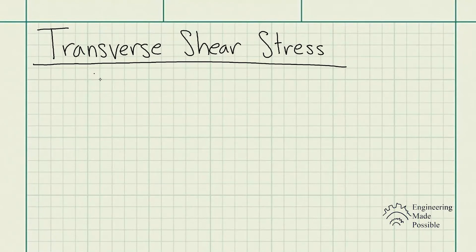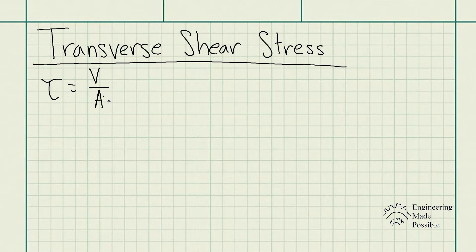Today we'll be going over transverse shear stress. We're all familiar with the shear stress formula, which is equivalent to the shear force divided by the cross-sectional area. One thing to remember is that this is an approximation or an average shear stress. However, the actual shear stress formula is a bit different.